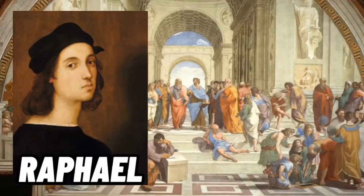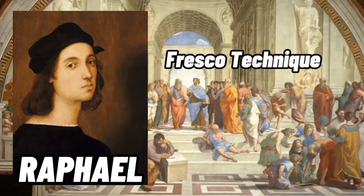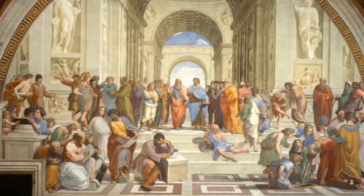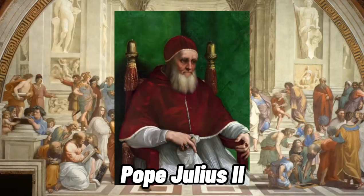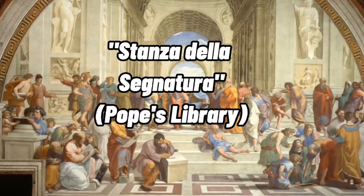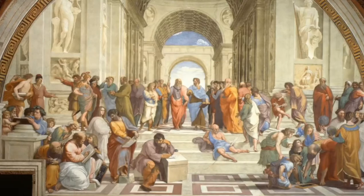It is a painting with a touch of fresco technique, painted around 1509 to 1511. Pope Julius II commissioned Raphael of Urbino to paint his papal residence, known as Stanza della Signatura, in Vatican.